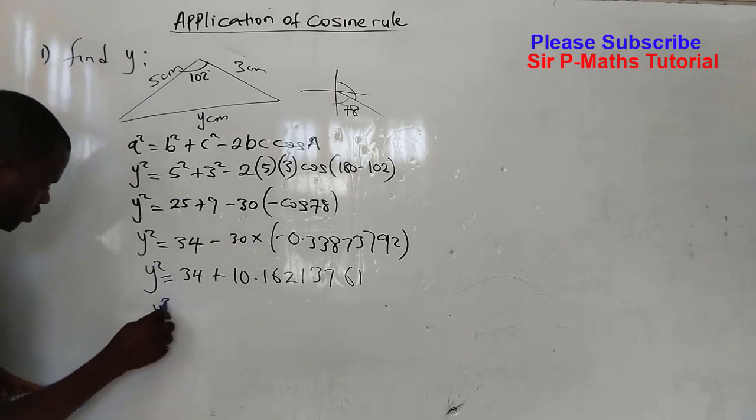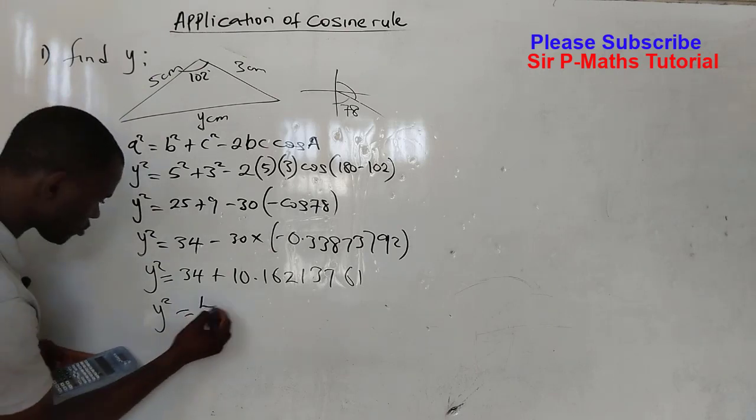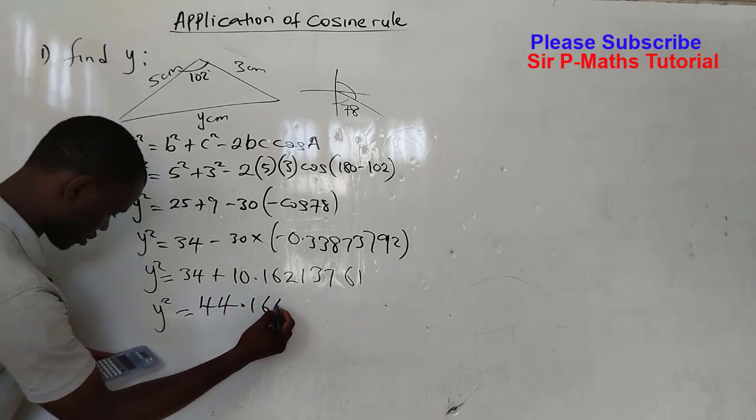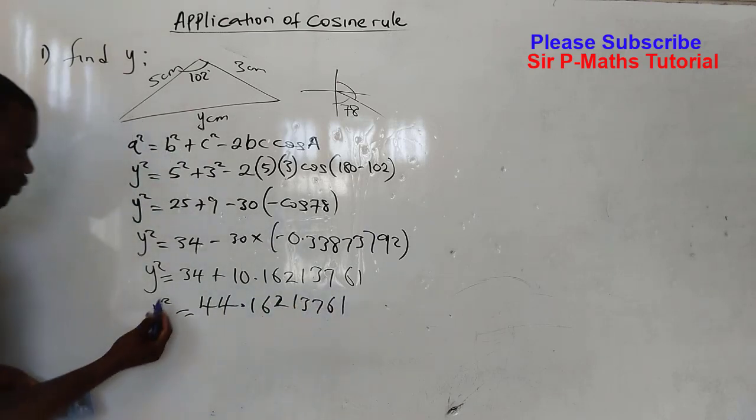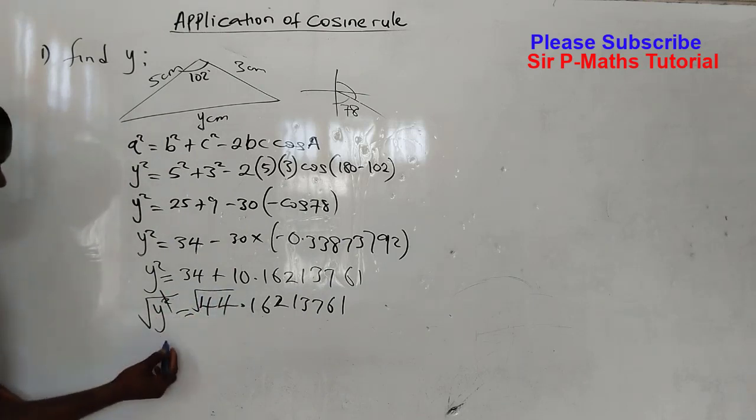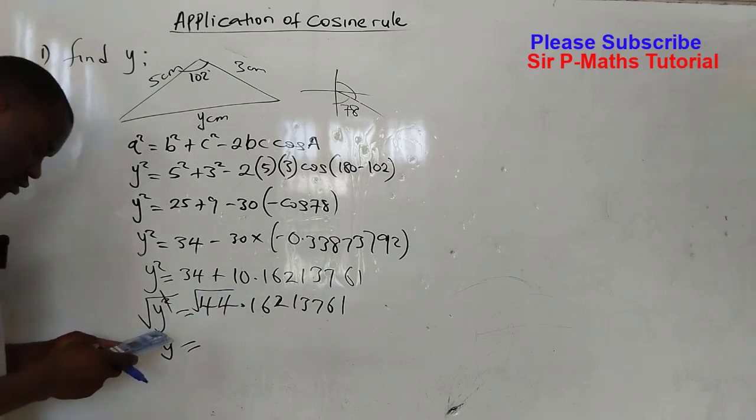Then we add both of them. I will have y² equal to 44.1613761. Take the square root of both sides to eliminate the square here. Therefore y will be equal to square root of this.